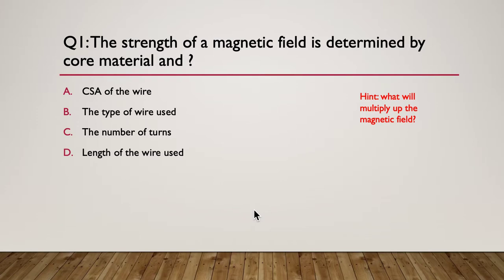Here's your hint. What will multiply up the magnetic field the most with those options? It's about combining magnetic fields together to make a stronger magnetic field. So how do you think we could do that? Pause here.